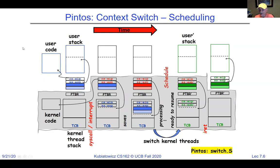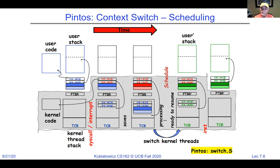Regarding how the page table base register knows where to look in kernel code: before 2018, the user's memory space actually contained the kernel in the upper part of the address space. It was simply a matter of when you switch into the kernel, you gain permission to use those page table entries. After the Meltdown vulnerability, kernels had to become much more careful about that.